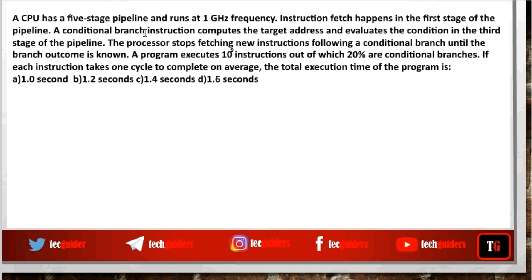A CPU has a 5-stage pipeline and runs at 1 GHz frequency. Instruction fetch happens in the first stage of the pipeline. A conditional branch instruction computes the target address and evaluates the condition in the third stage. The processor stops fetching new instructions following a conditional branch until the branch outcome is known. A program executes 10^9 instructions, out of which 20% are conditional branches. If each instruction takes 1 cycle to complete on average, the total execution time of the program is?